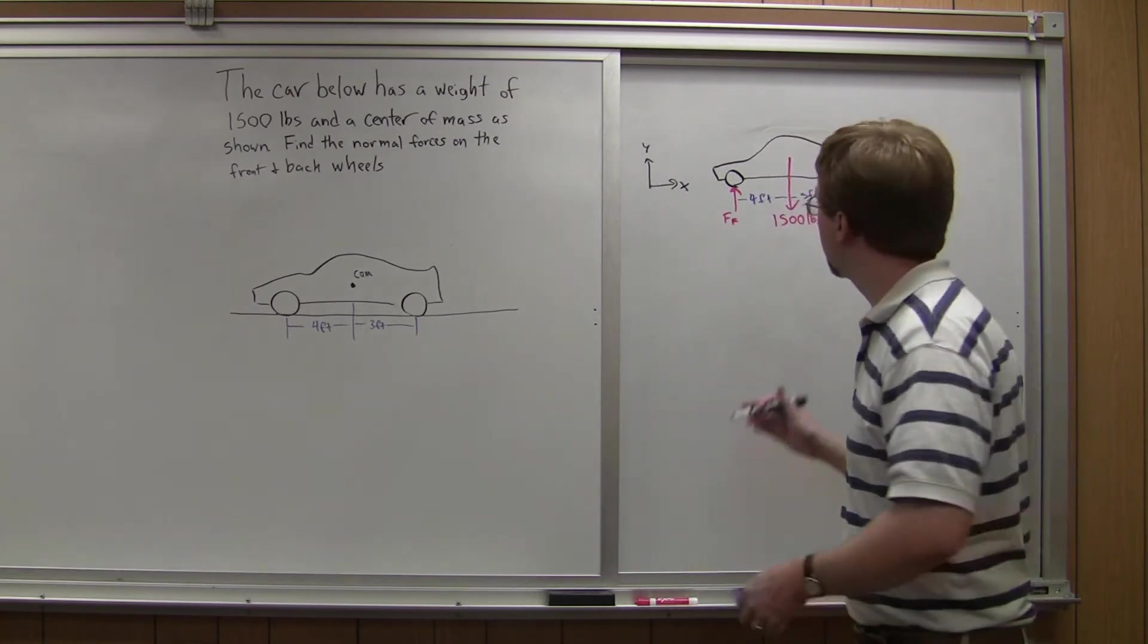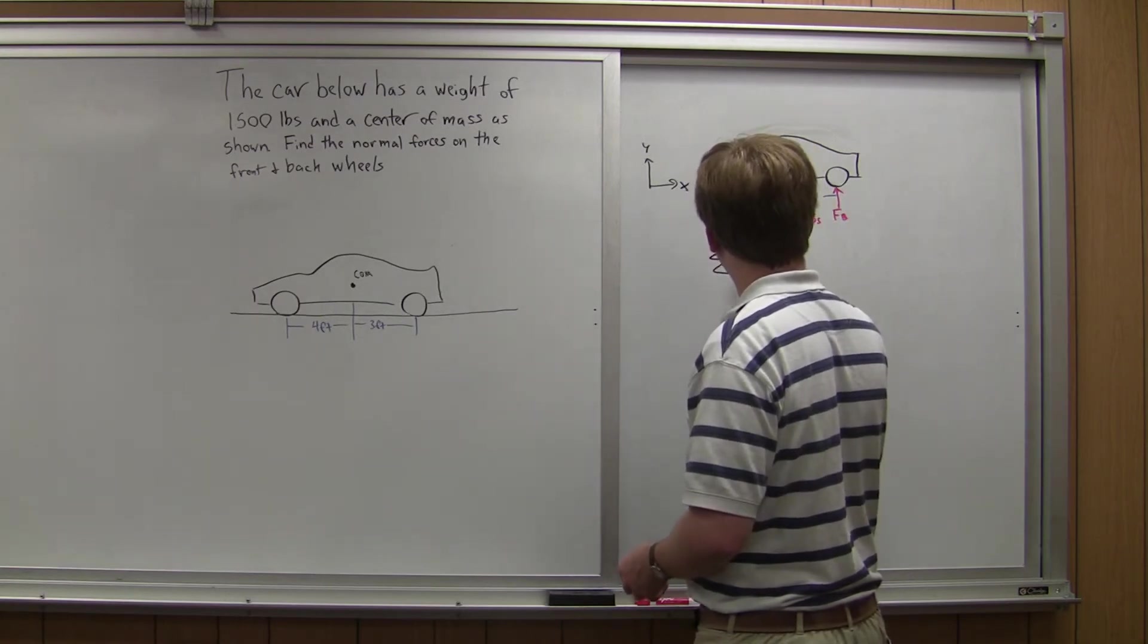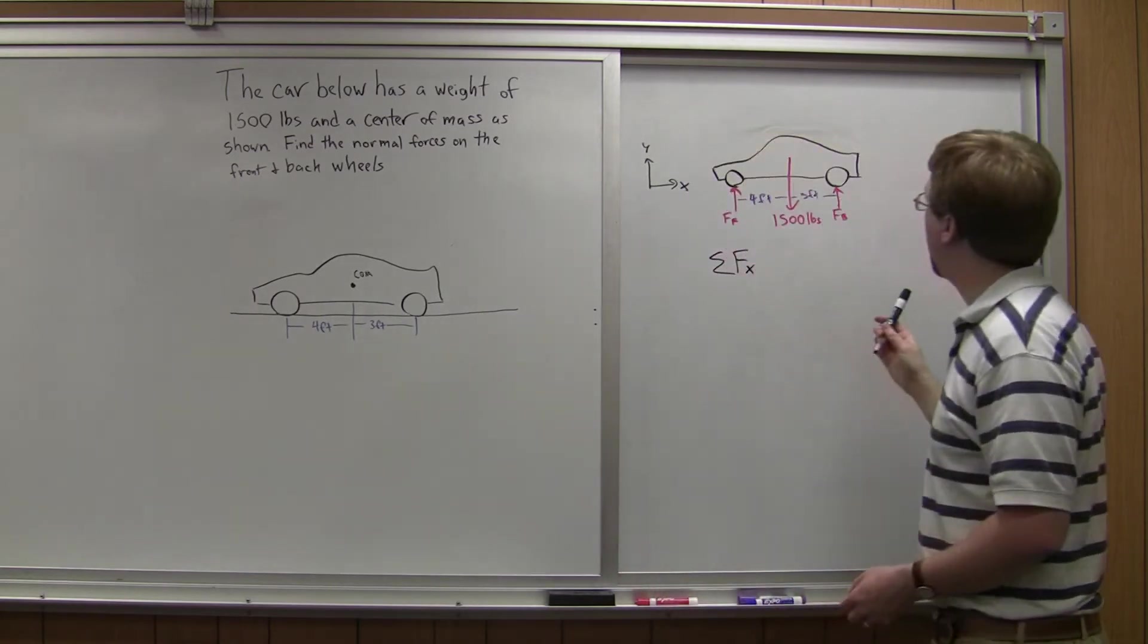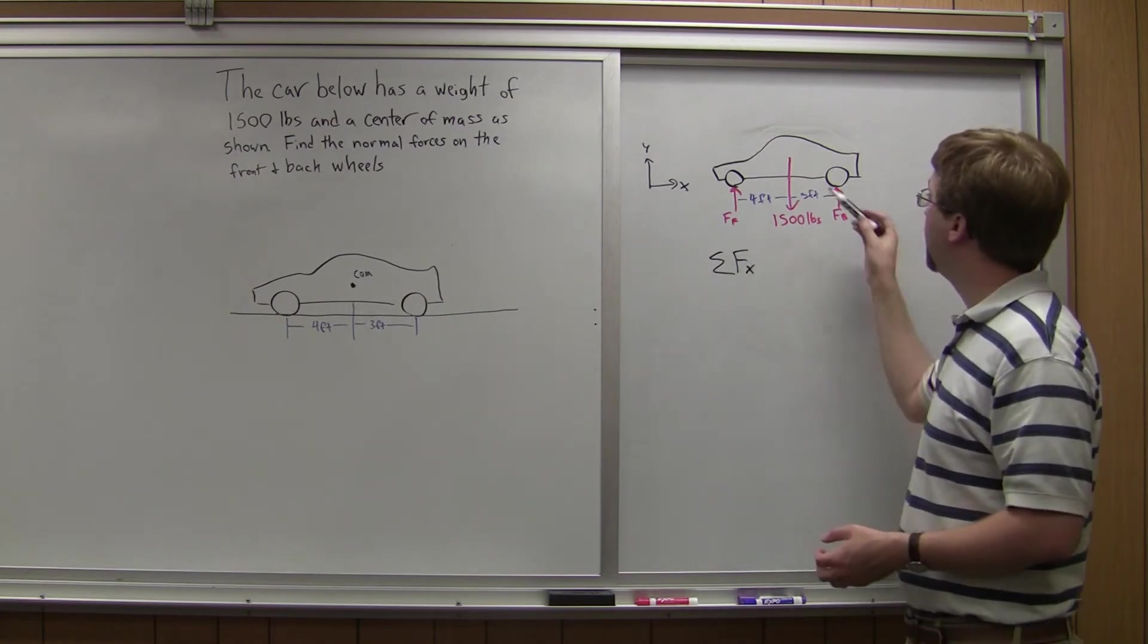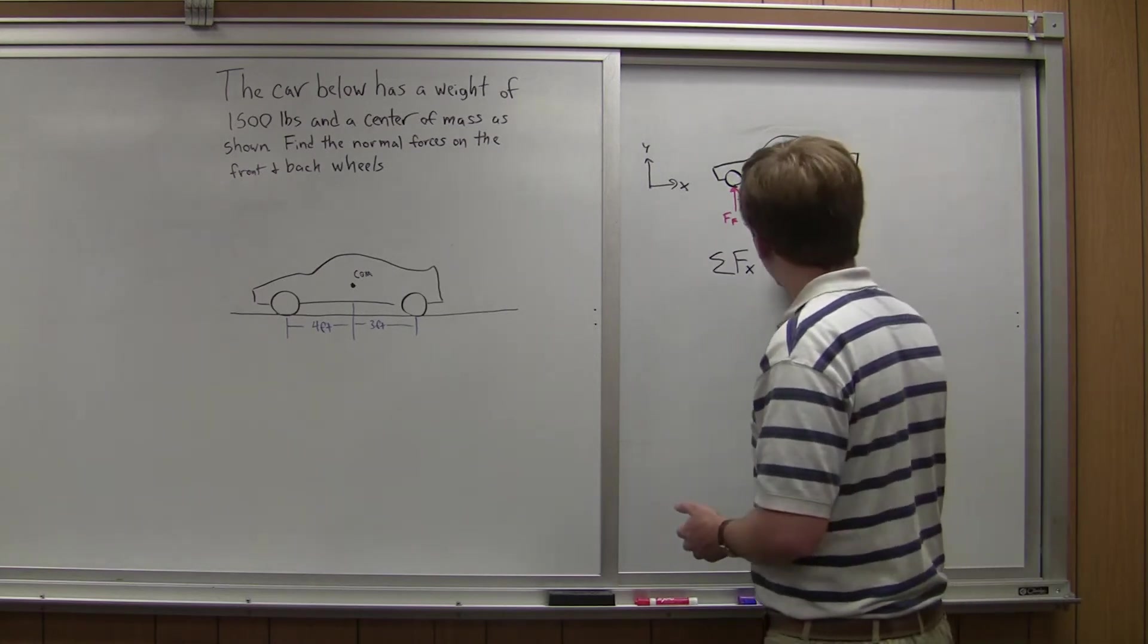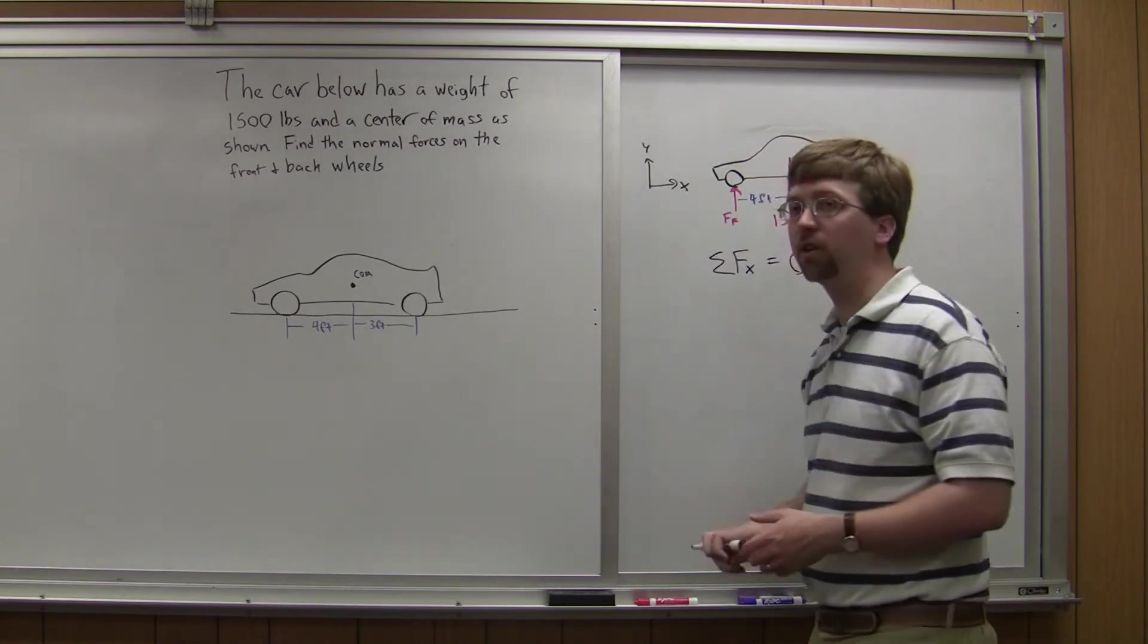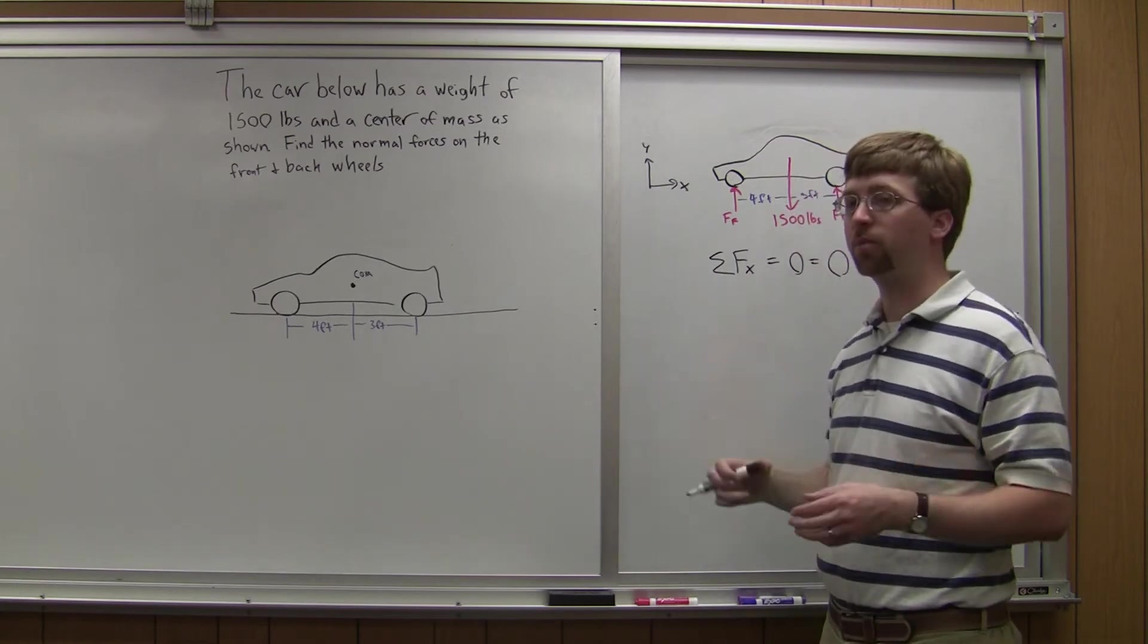So let's start with sum of forces in the x. So in the x direction, I have, well, nothing. Ff, Fb, and this 1,500 pound force are all in the y direction. So in the x direction, I simply have the equation 0 equals 0, which is true, but not terribly helpful.